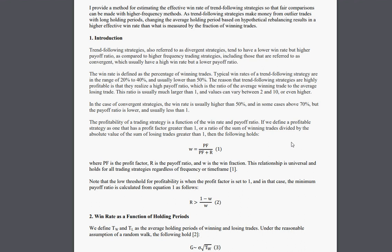The win rate of a strategy is the profit factor divided by the profit factor plus the payoff ratio. The profit factor is the sum of winning trades divided by the sum of losing trades, and the payoff is the average winning trade divided by the average losing trade.